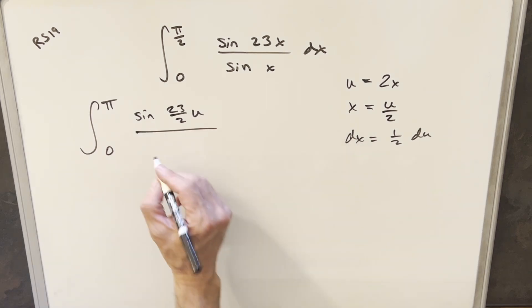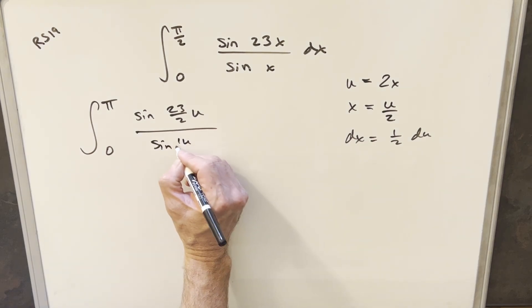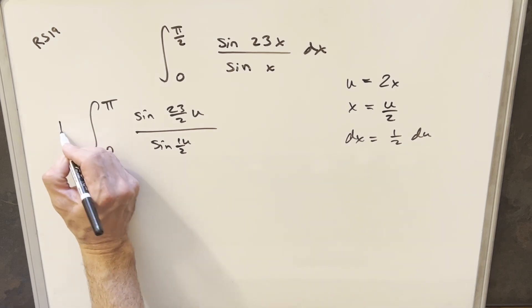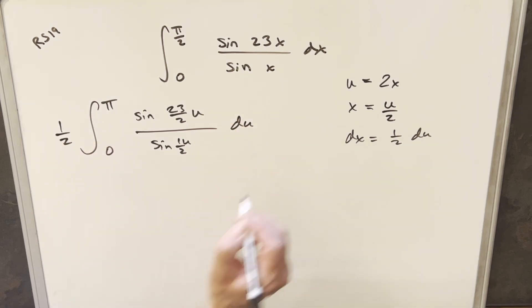And then for sin x, that's just going to be sin of 1 half u. Our dx is half du. I'm going to bring the half out front, and we'll have our du right here.